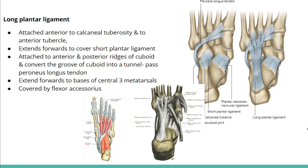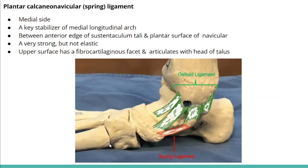The long plantar ligament attaches to the anterior and posterior ridges of the cuboid bone, converting its groove into a tunnel through which the peroneus longus tendon passes. The ligament then extends forward and attaches to the bases of the central three metatarsal bones. This ligament is covered by the flexor accessorius, or quadratus plantae muscle, located in the second layer of the sole.